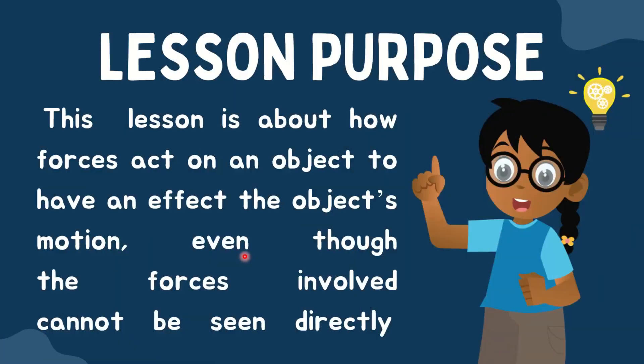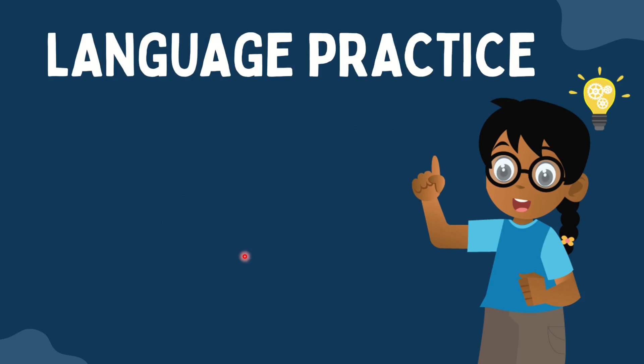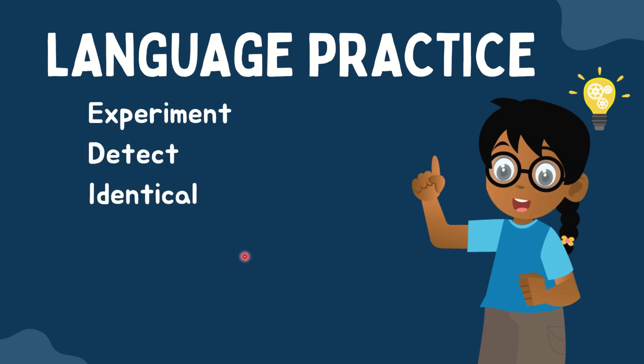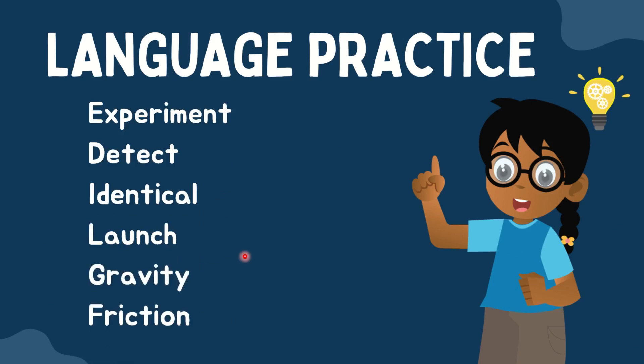Let's proceed to the lesson purpose. This lesson is about how forces act on an object to have an effect on the object's motion, even though the forces involved cannot be seen directly. Now let's proceed to language practice. These are the words you are going to encounter throughout this lesson — please repeat after me: experiment, detect, identical, launch, gravity, and friction.